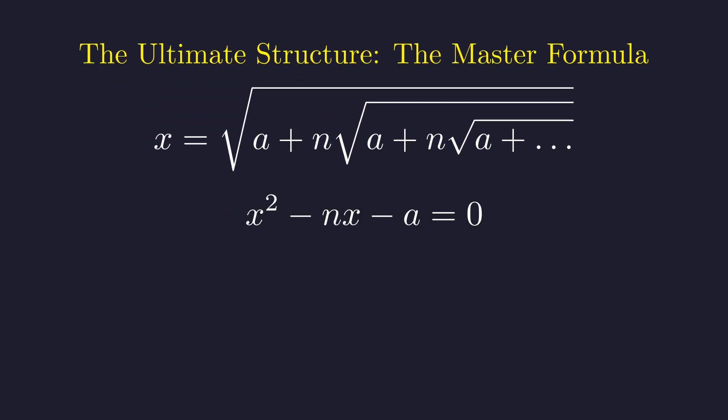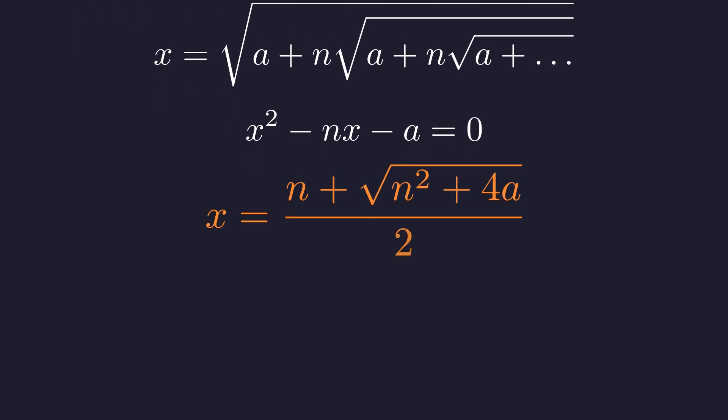Same self-similarity logic gives us this master quadratic. And here's our master formula. For any positive a and n, this single expression can solve any nested radical with this pattern.